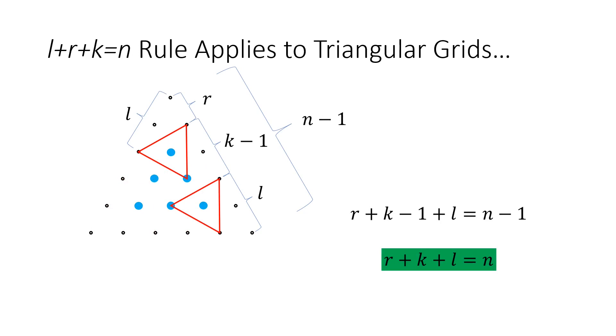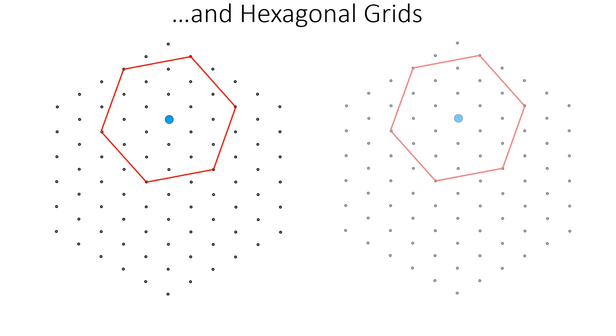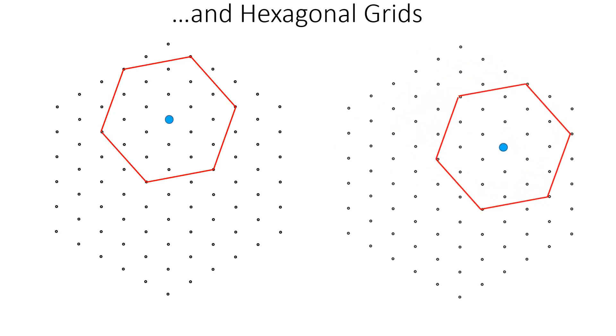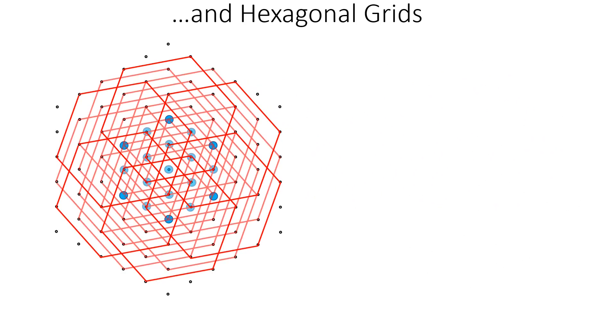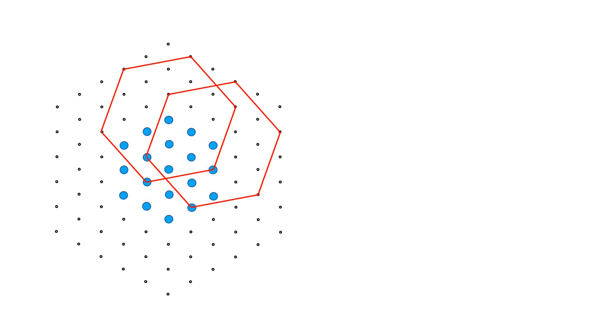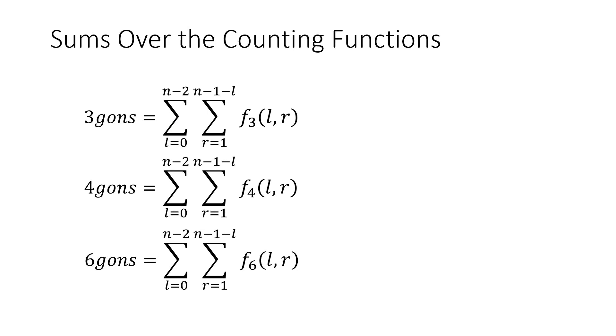And now watch as we get the same result for the hexagonal grids. We copy, rotate, merge, rinse, and repeat. And fill in all the possible hexagons. And by inspection, we get the same formula. So now I'm labeling the number of triangles 3-gons, the squares are 4-gons, and the hexagons are 6-gons.